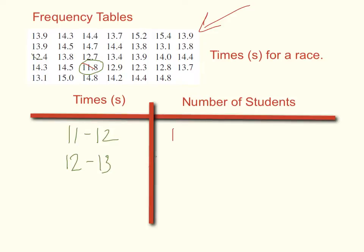There's one, two, three, four, five. Five numbers between 12 to 13.